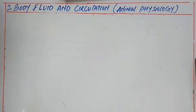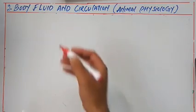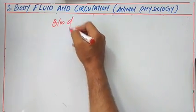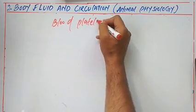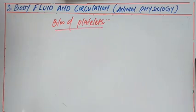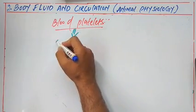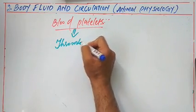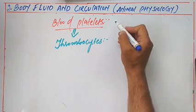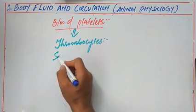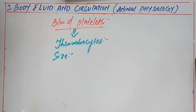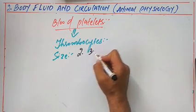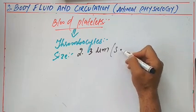Hello students. In today's session we will deal about blood platelets, that is the third type of blood cells. Blood platelets are also known as thrombocytes. If we look at the size, they are 2 to 3 micrometers — the smallest sized blood cells.